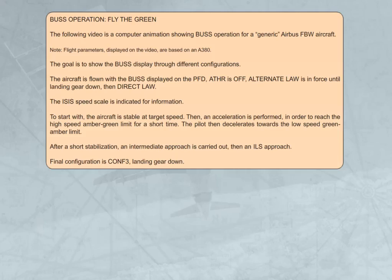Flight parameters displayed on the video are based on an A380. The goal is to show the BUS display through different configurations. The aircraft is flown with the BUS displayed on the PFD. Auto thrust is off, alternate law is in force until landing gear down, then direct law. The ISO speed scale is indicated for information. To start with, the aircraft is stable at target speed. Then an acceleration is performed in order to reach the high speed amber-green limit for a short time. The pilot then decelerates towards the low speed green-amber limit. After a short stabilization, an intermediate approach is carried out, then ILS approach. Final configuration is CONF3, landing gear down.